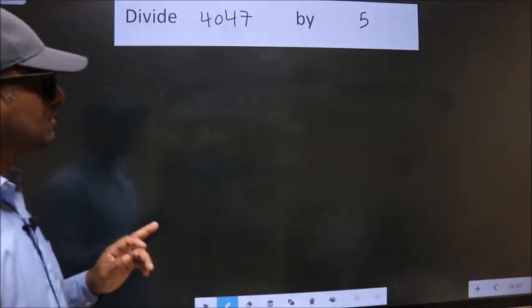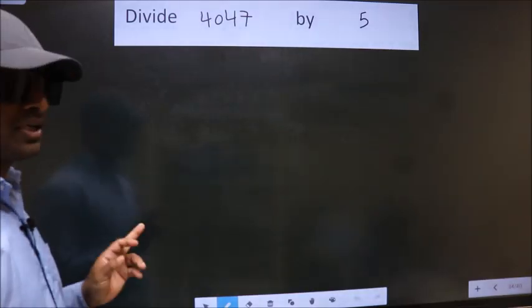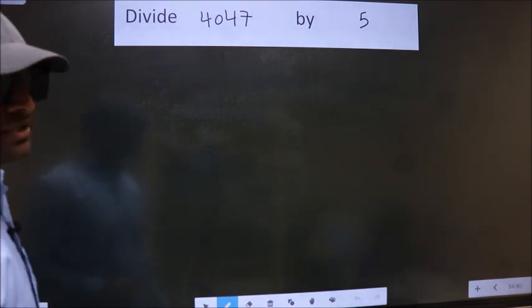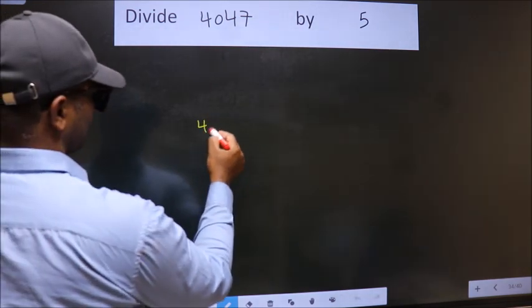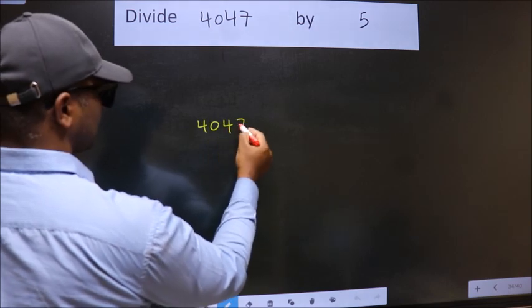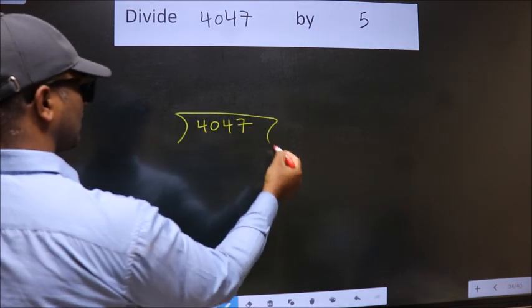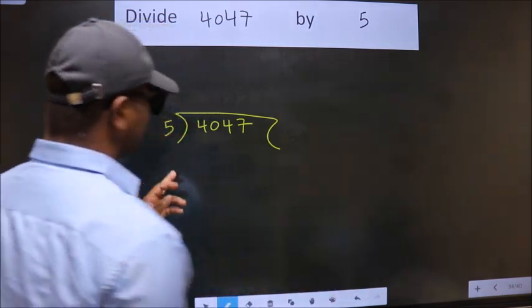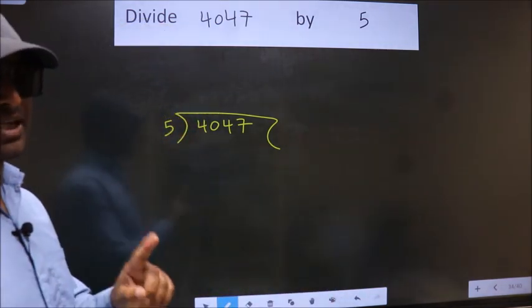Divide 4047 by 5. To do this division, we should frame it in this way: 4047 here, 5 here. This is your step 1.